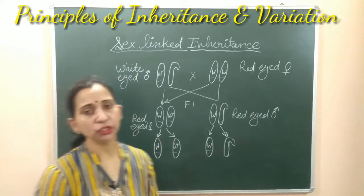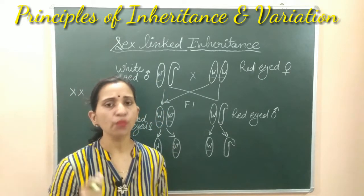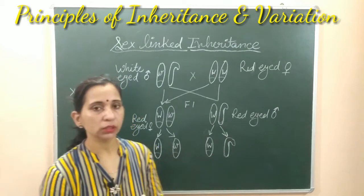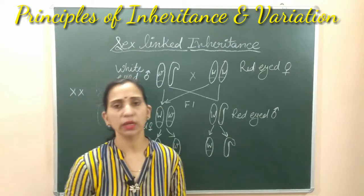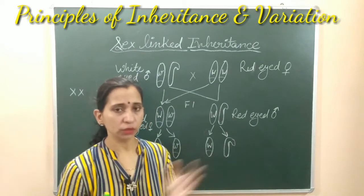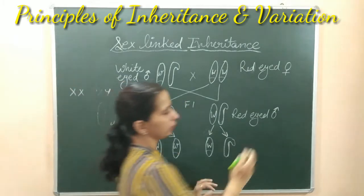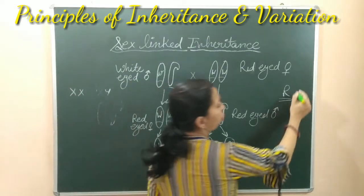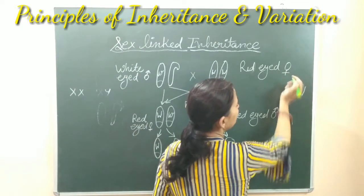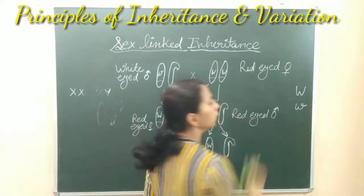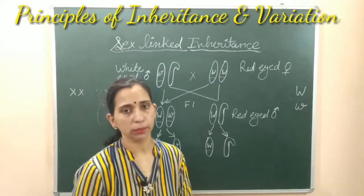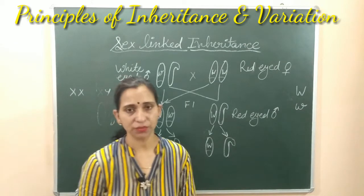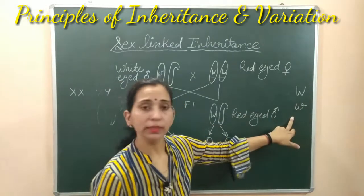The example we are using here is eye color. The normally dominant eye color found in Drosophila is the red color. Besides using R as a symbol, we use capital W for the red or dominant allele, and small w to show the recessive allele which gives white color. So red color of the eye is the dominant character and white color is the recessive character.